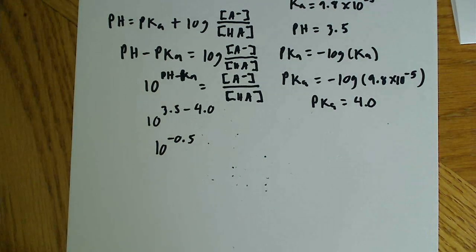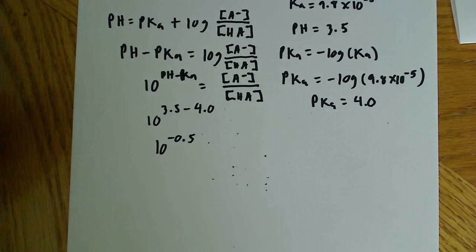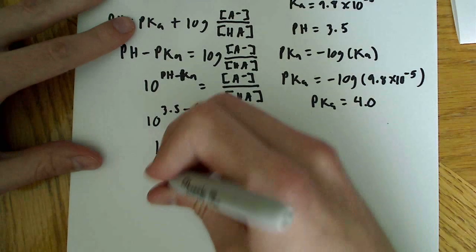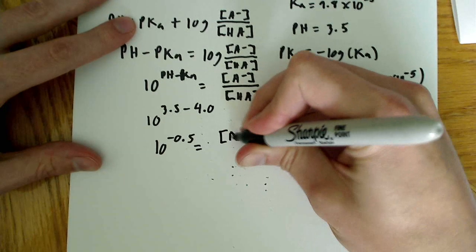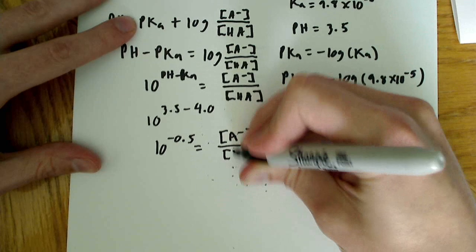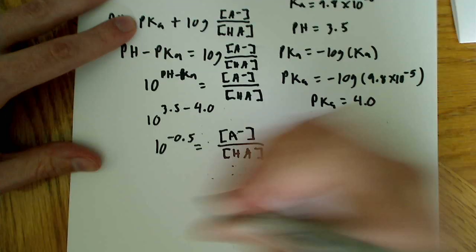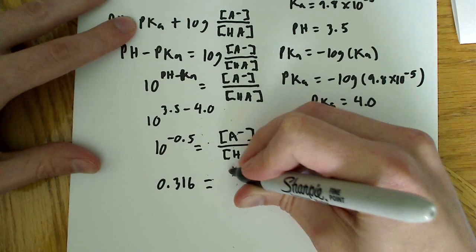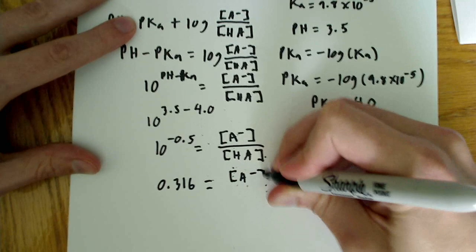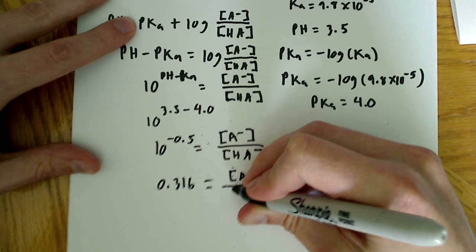So, when you plug that in your calculator, you're going to get about 0.316. So, 0.316 is equal to the concentration of deprotonated over protonated.